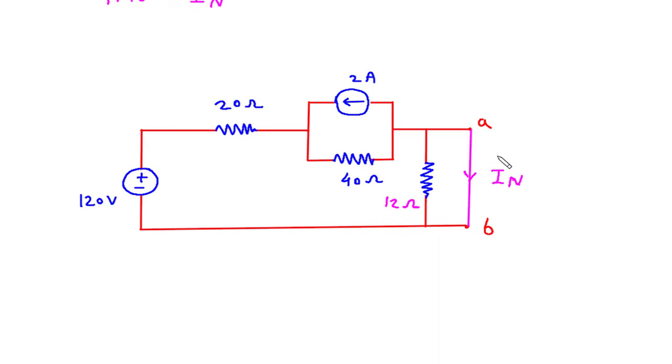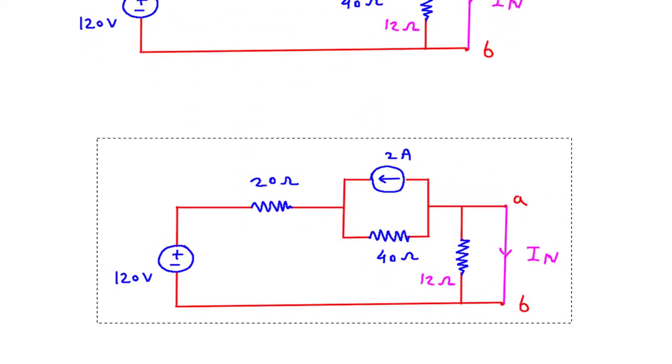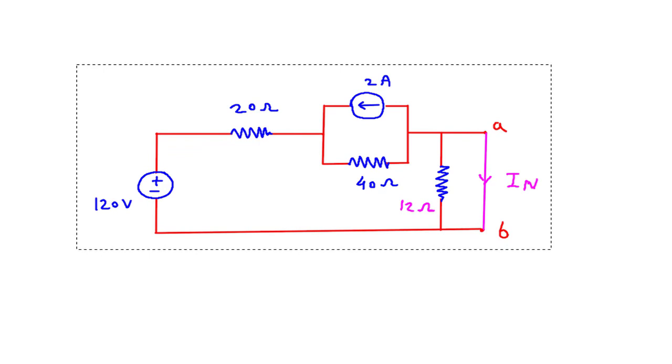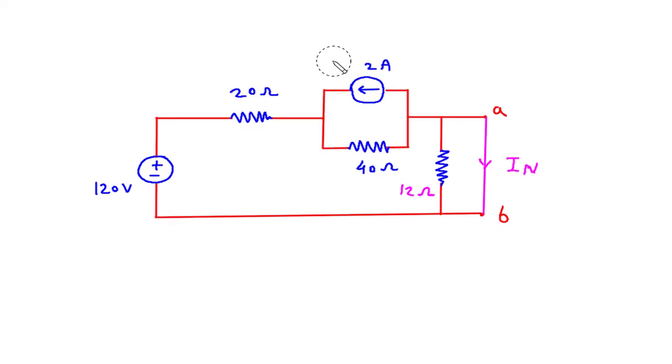Now to find IN, we will convert this 2 Amp current source into its equivalent voltage source. Also as we can see that this 12 Ohm is short circuited. So this will be ignored.